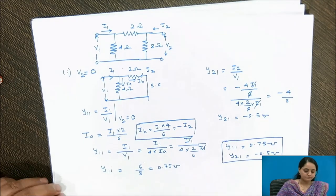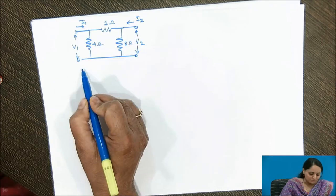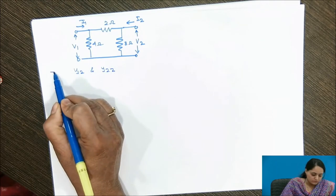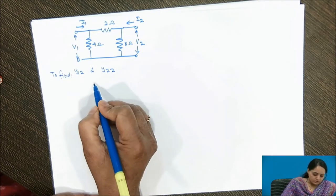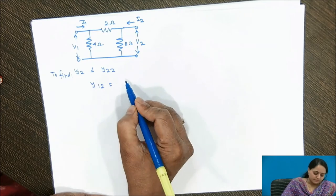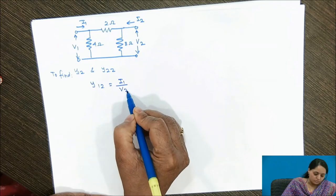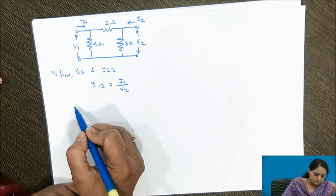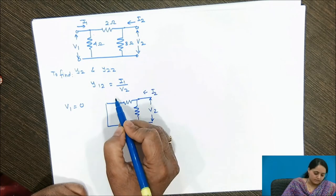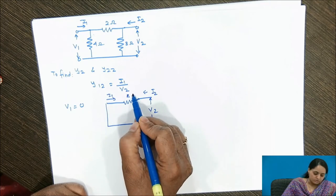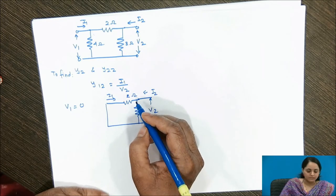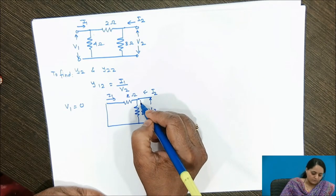Now let us calculate the remaining two parameters, Y12 and Y22. Y12 is the ratio of current I1 to V2. We redraw the circuit with V1 short-circuited. In this configuration, the current flowing through 8 ohms is Ia and the current through 2 ohms is Ib. Using the current division rule, Ib equals I2 multiplied by 2 divided by 10, which is one-fifth of I2.